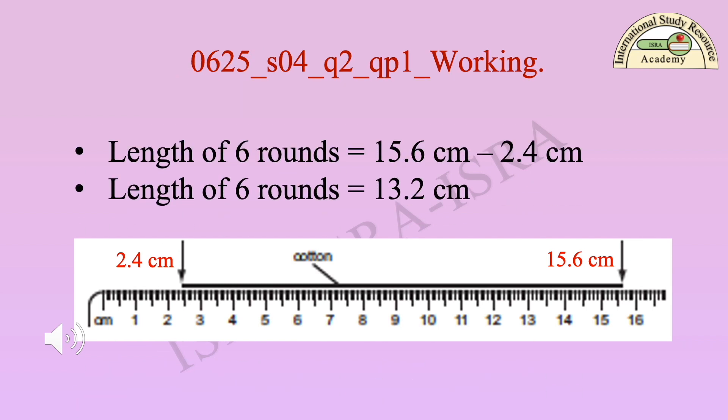Working step 3: Difference of two readings. Length of six rounds is equal to 15.6 cm minus 2.4 cm. Length of six rounds is equal to 13.2 cm.